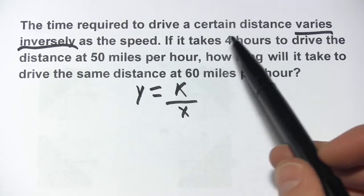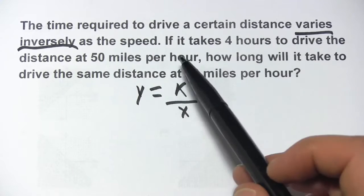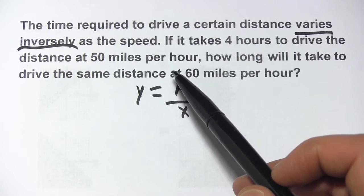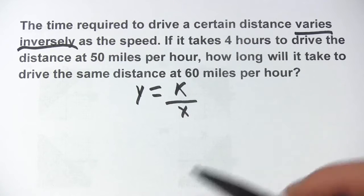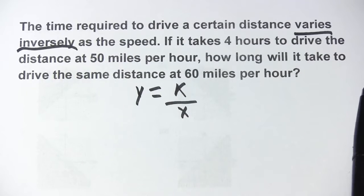In this case, it says the time required to drive varies inversely with the speed. Well, that makes sense. The time would go down if the speed goes up. So going in different directions, that's inverse variation.